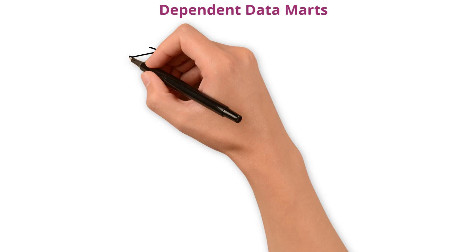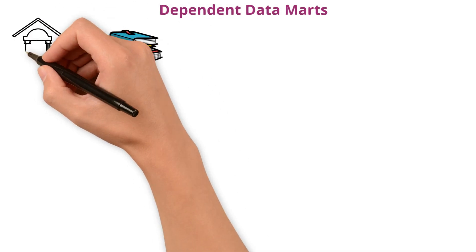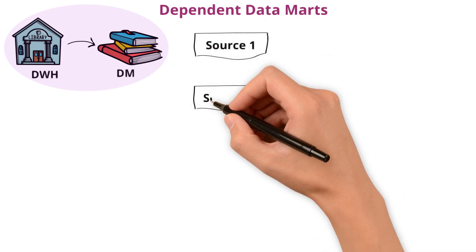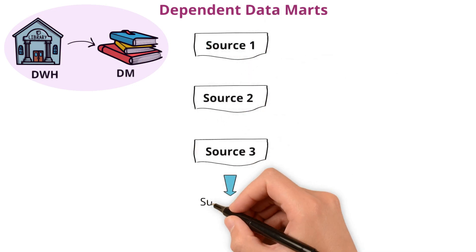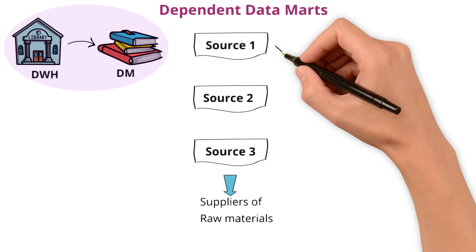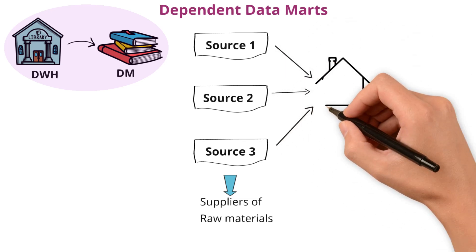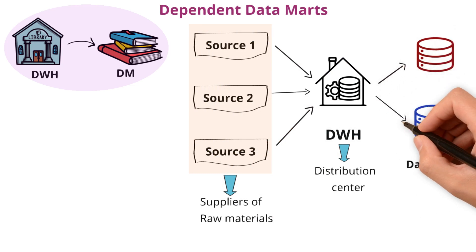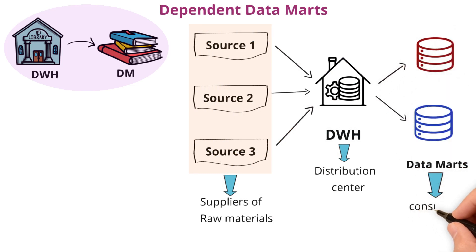Dependent data marts. These are like the best-seller section directly sourced from the main library's collection. They depend on the larger data warehouse for their stock. Here, the data sources acting as suppliers of raw materials, sending data into the data warehouse. The data warehouse serves as a distribution center, collecting the raw materials as any data warehouse does. The data marts get the data from the warehouse and make it available to consumers.